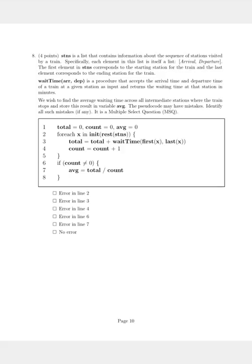So this question here reads that stations is a list that contains the information about the sequence of stations visited by a train. Specifically, each element in this list is itself a list.